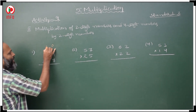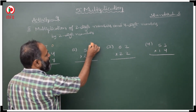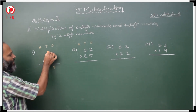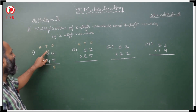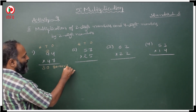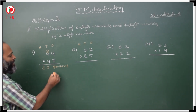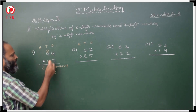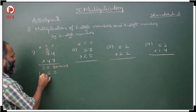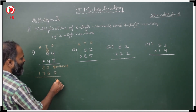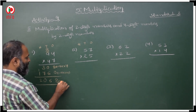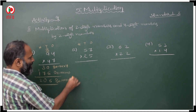Now: ones, tens, hundreds. Start with 7: 7 fours are 28, write 8 carry 2; 7 fours are 28, 29, 30. This is the product of 44 with 7. Now start with 4 in tens place, keep 0 first. 4 fours are 16 carry 1; 4 fours are 16 plus 1 is 17. Adding: 8, 6, 10 — carry over — this is the product of 44 into 40, and the complete product of 44 into 47.